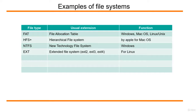Some examples of file systems: you have the File Allocation Table (FAT), available on Windows, macOS, and Linux. For macOS you have HFS+. NTFS, the New Technology File System, is for Windows. The most popular one on Linux is the extended file system — ext2, ext3, or ext4.